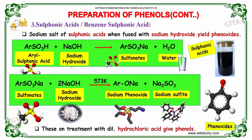Sodium salts of sulfonic acids, when fused with sodium hydroxide, yield phenoxides. The aryl sulfonic acid reacts with sodium hydroxide to give sulfonates and water. Sulfonates when reacted with 2 moles of sodium hydroxide at 573 Kelvin give sodium phenoxide and sodium sulfite. These on treatment with dilute hydrochloric acid give phenols.